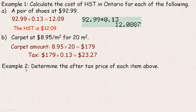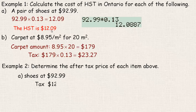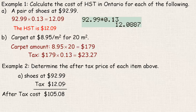Now let's determine the after-tax price for each item. For the shoes, we take $92.99 and add the $12.09 tax. Adding those together: 9 and 9 is 18, carry the 1; 1 and 9 adds to 10, carry the 1; then 2, 2, and that 1 would be 5, and 9 and 1 adds to 10 — so it would be $105.08.